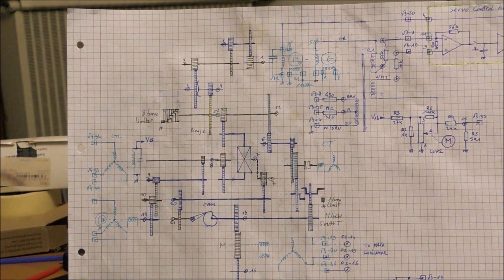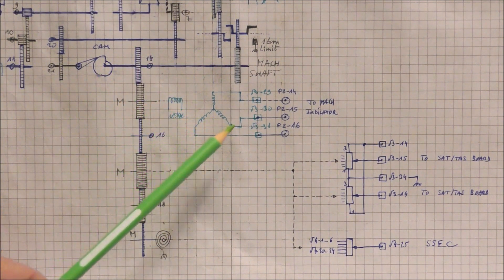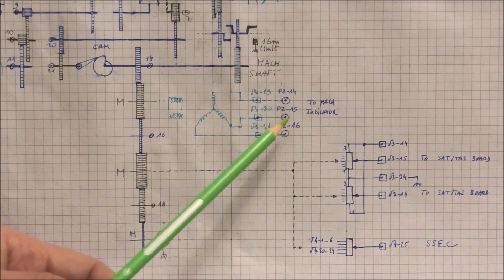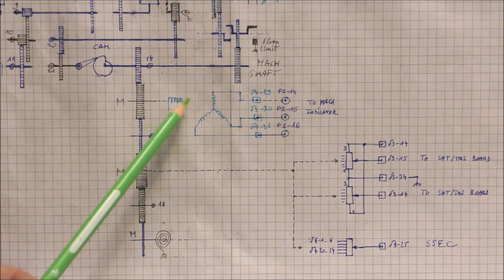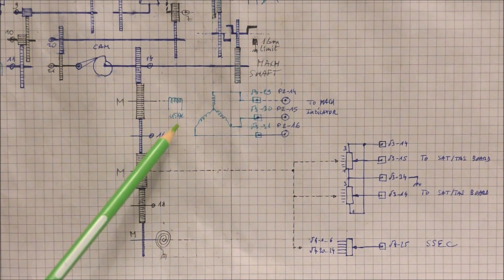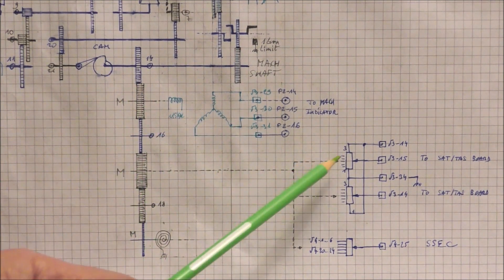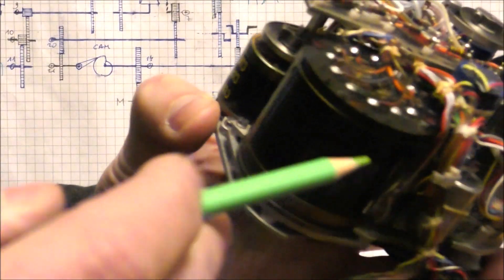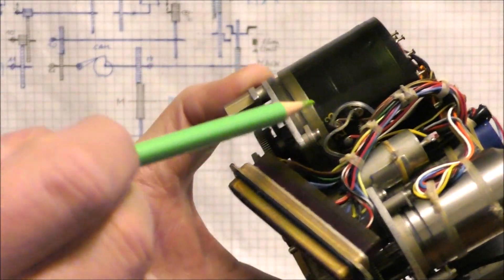What is interesting is the output shaft which is here. We can see that the output shaft is linked to one synchro transmitter. The stator of this synchro transmitter is connected to three pins of one connector. So this is obviously the output of the Mach number. The reference winding of this synchro is connected directly to the power supply, 115 volts, which is the reference. Also, there are these three potentiometers. One is used for the static source error correction. This is this potentiometer here. There are also two other potentiometers I didn't see the first time.